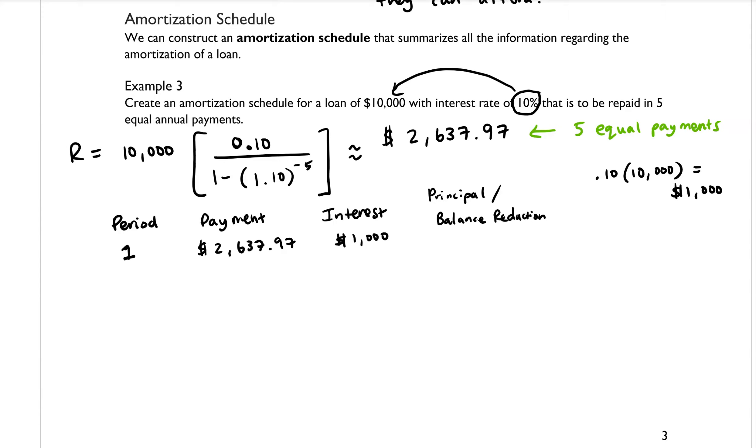So if $1,000 is going towards the interest, then the rest of the payment will be going to the balance reduction or the principal. So if we subtract this by this, that will give us the principal amount. So that's going to be $1,637.97.